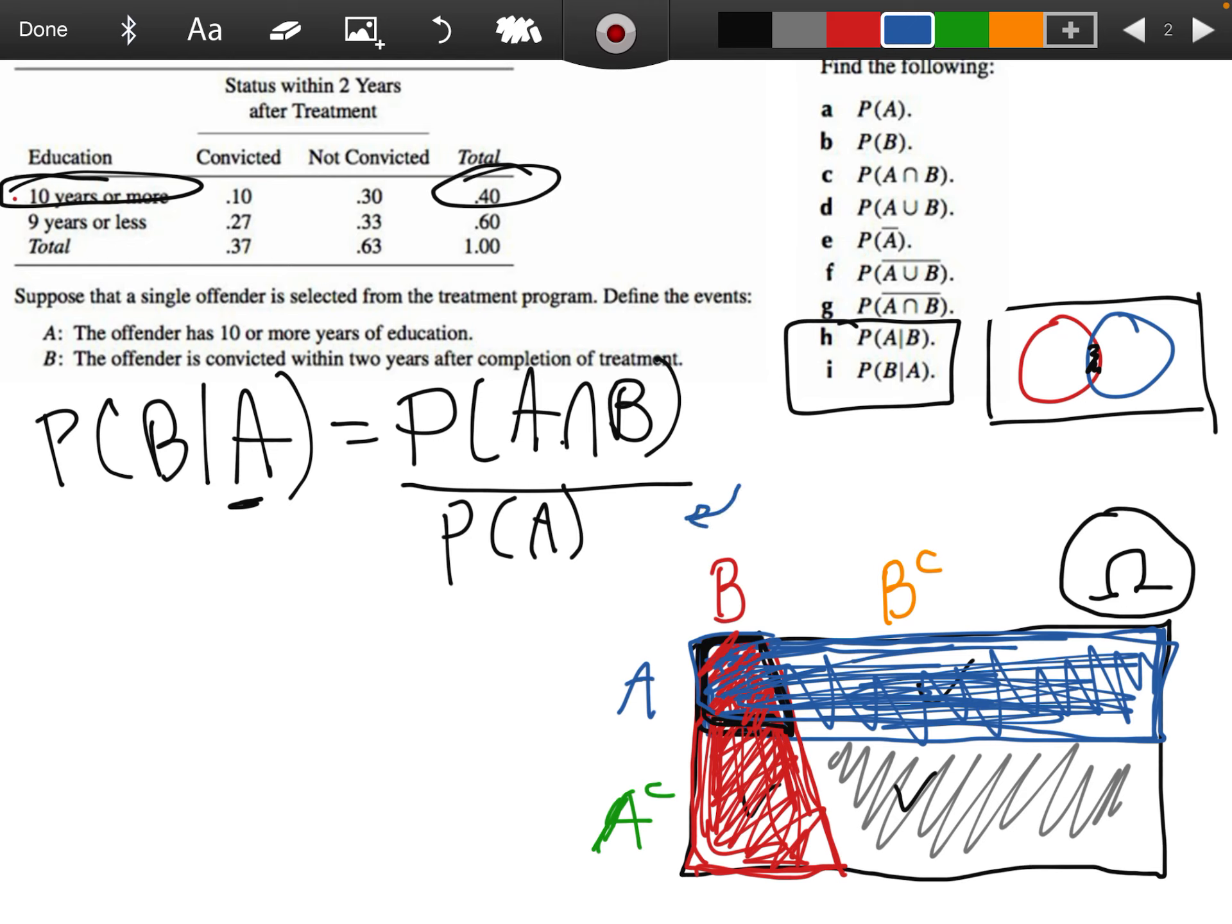It's out of, it makes sense - we're saying, given that we're in this A region, so that's what's going in the denominator, we're saying out of that, what's the probability that we're in the overlap, given that we're already in the blue there?